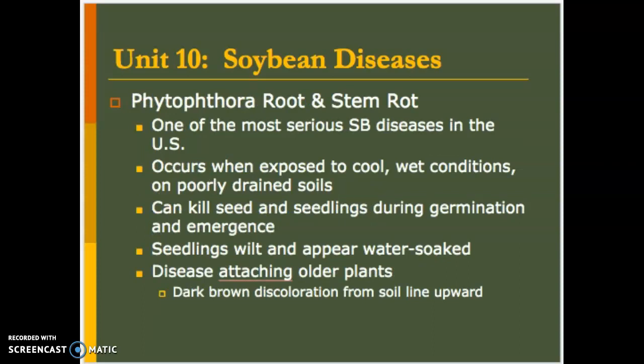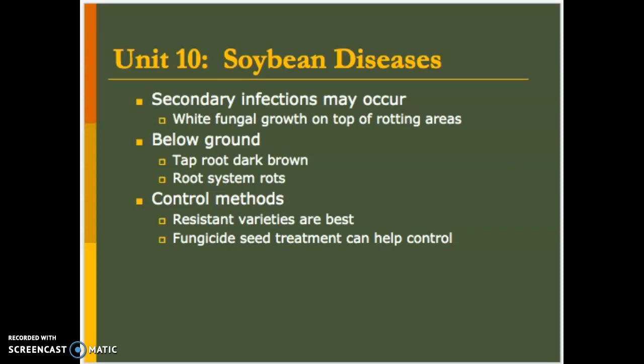Next is Phytophthora root and stem rot — one of the most serious soybean diseases in the United States. It usually occurs when exposed to cool, wet conditions on poorly drained soils. If you think about southern Illinois and our clay soils, planting soybeans early in the spring during a long cool wet spring, this is a particular problem. It'll kill the seed and kill the emerging seedling. At germination the seedlings will be kind of water-soaked, and the disease attaches itself to older plants — you can see a dark brown discoloration from the soil line moving upward on the stem, with secondary infections on neighboring healthier plants that will look like a mold on top of the rotting areas.